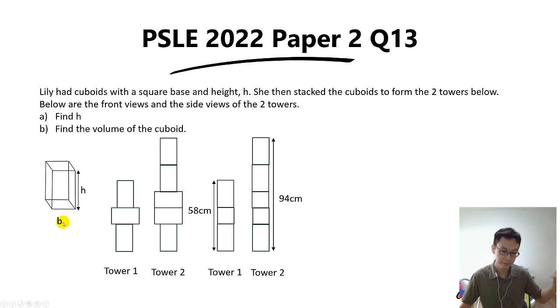In other words we got two unknowns and we have two information here, so you need to form two equations in order to solve our two unknowns.